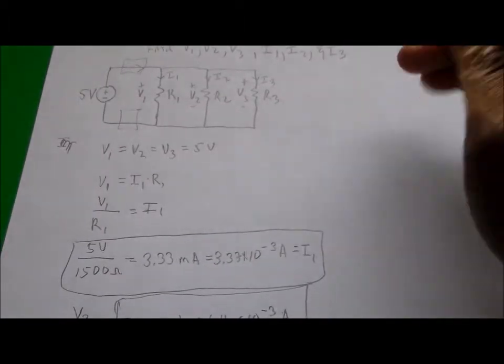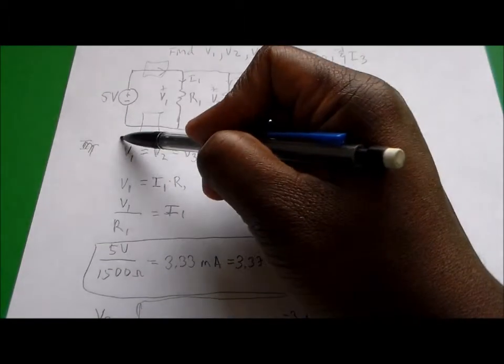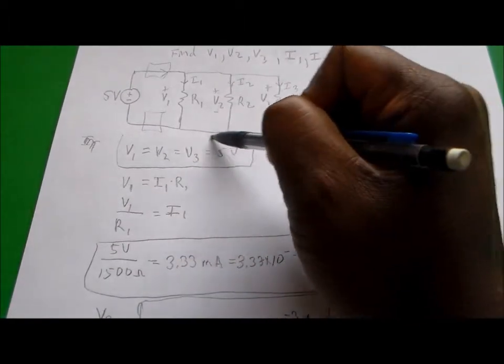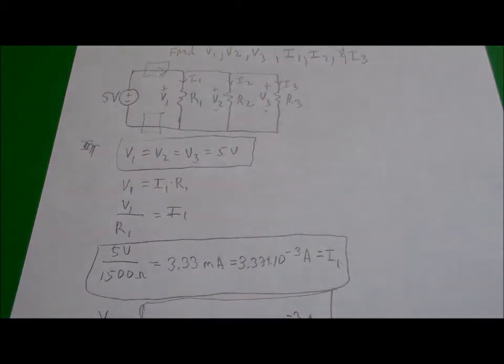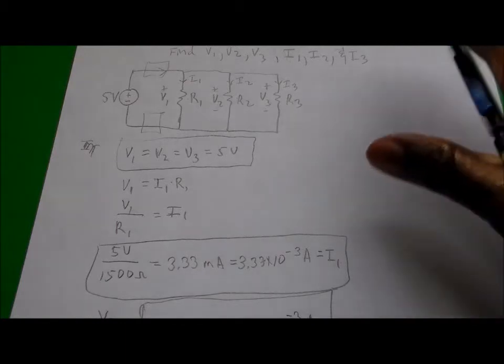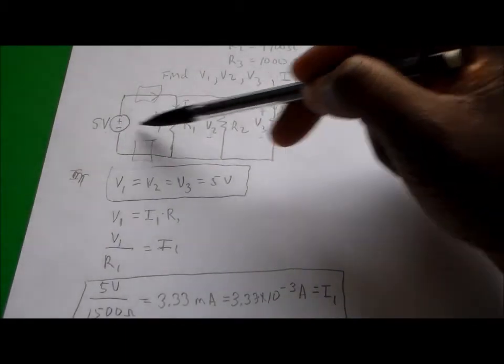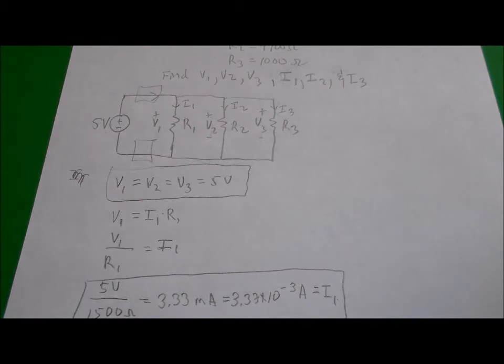We know that the voltage across all three resistors is equal to 5 volts because all three components are in parallel with the 5 volt voltage source. That concludes this problem.